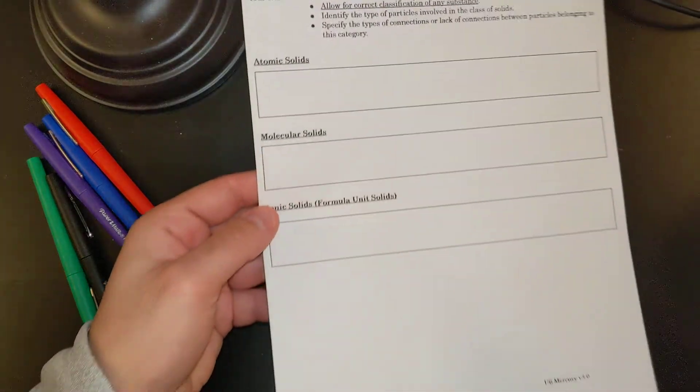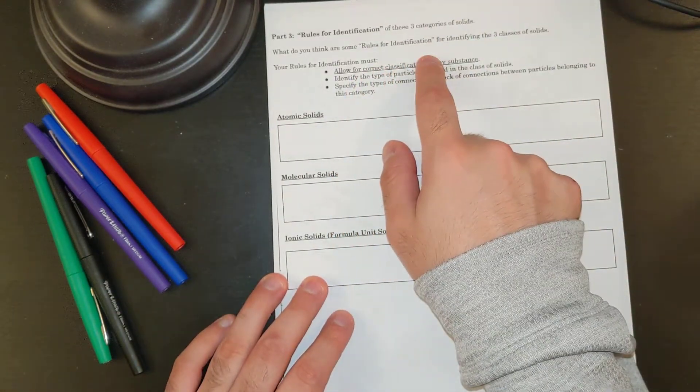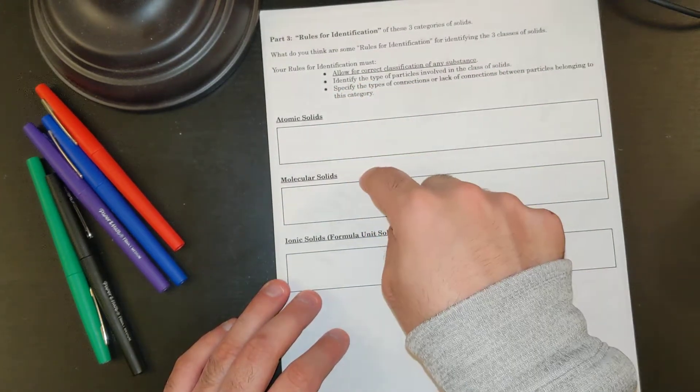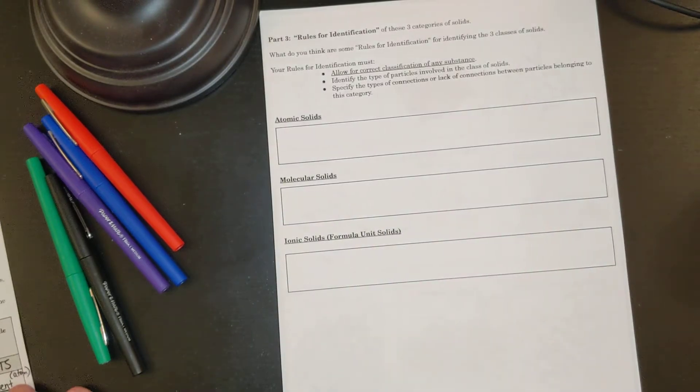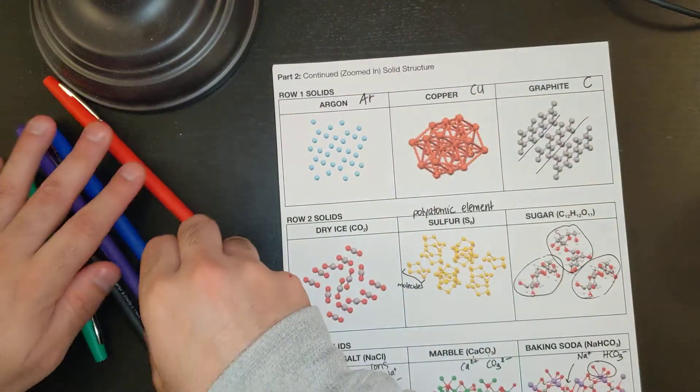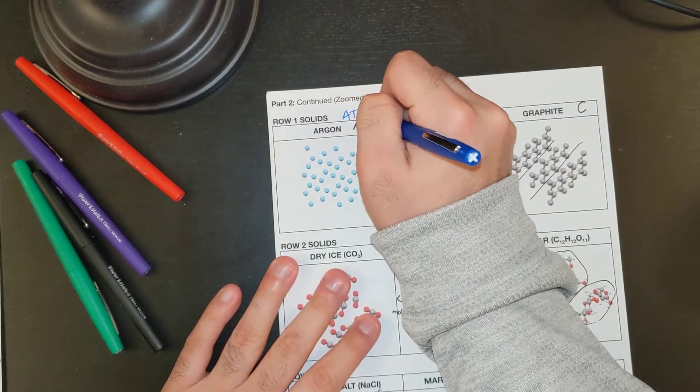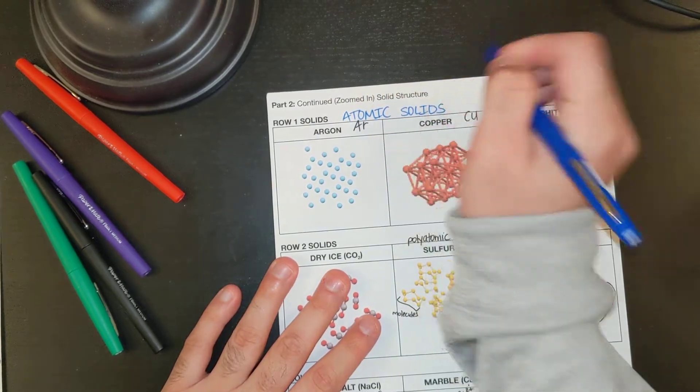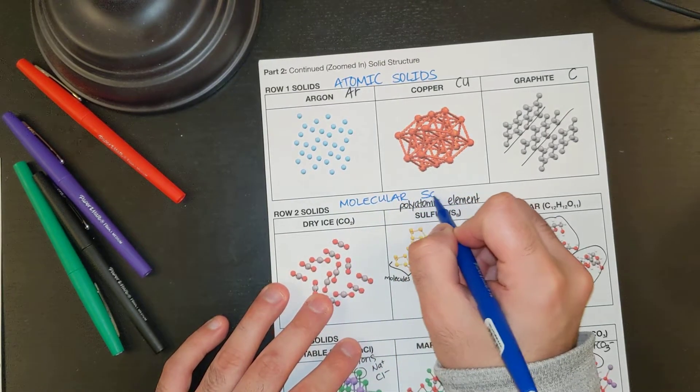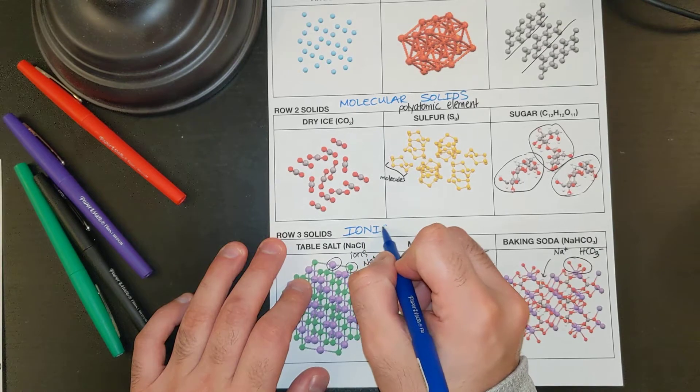All right, so now we're going to continue on to part three of this activity in this next video. What do you think are some rules for identification for identifying the three classes of solids? We have atomic solids, molecular solids, and ionic solids. Right now, I'm going to tell you that there is a name for these solids. Row one solids are known as atomic solids. Row two are known as molecular solids. And then finally, row three are ionic solids.